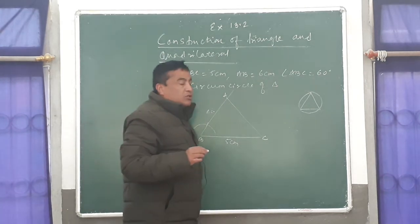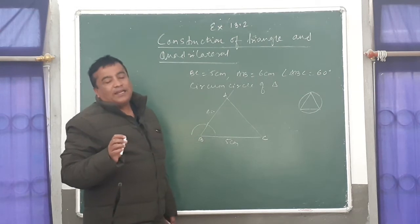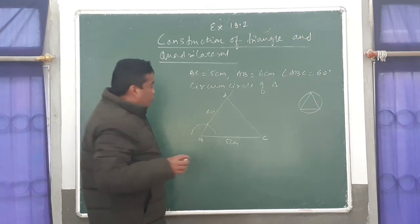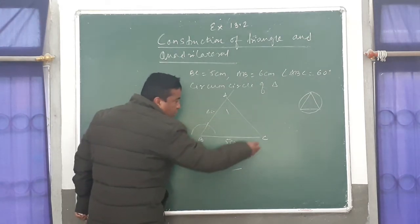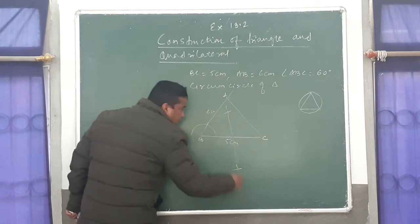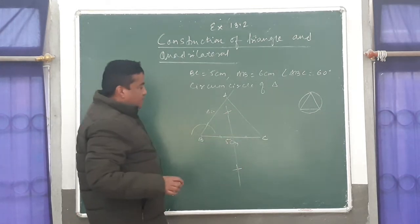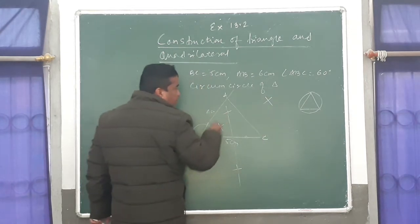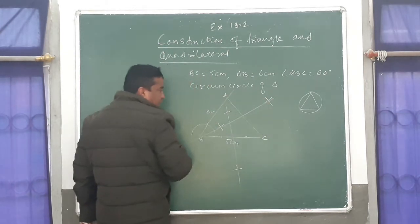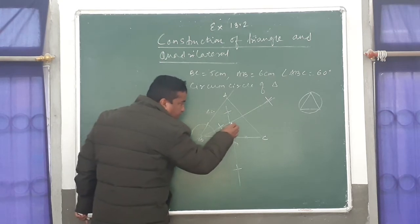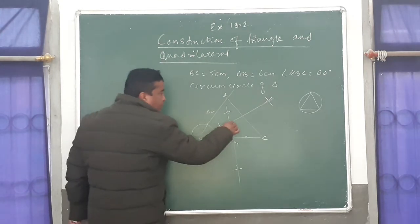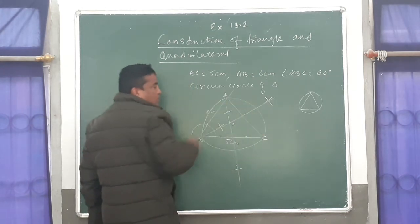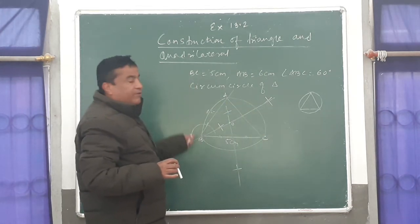After that you have to construct the circumcircle. To construct the circumcircle, you have to bisect any two sides. There are three sides in the triangle; you bisect any two sides and draw the perpendicular bisector from each. BC I have bisected, and then I will bisect AC. From A and C join it. This point is very important — write O here. Then from O, take OA, OB, or OC as radius and draw a circle. This is called the circumcircle of the triangle.